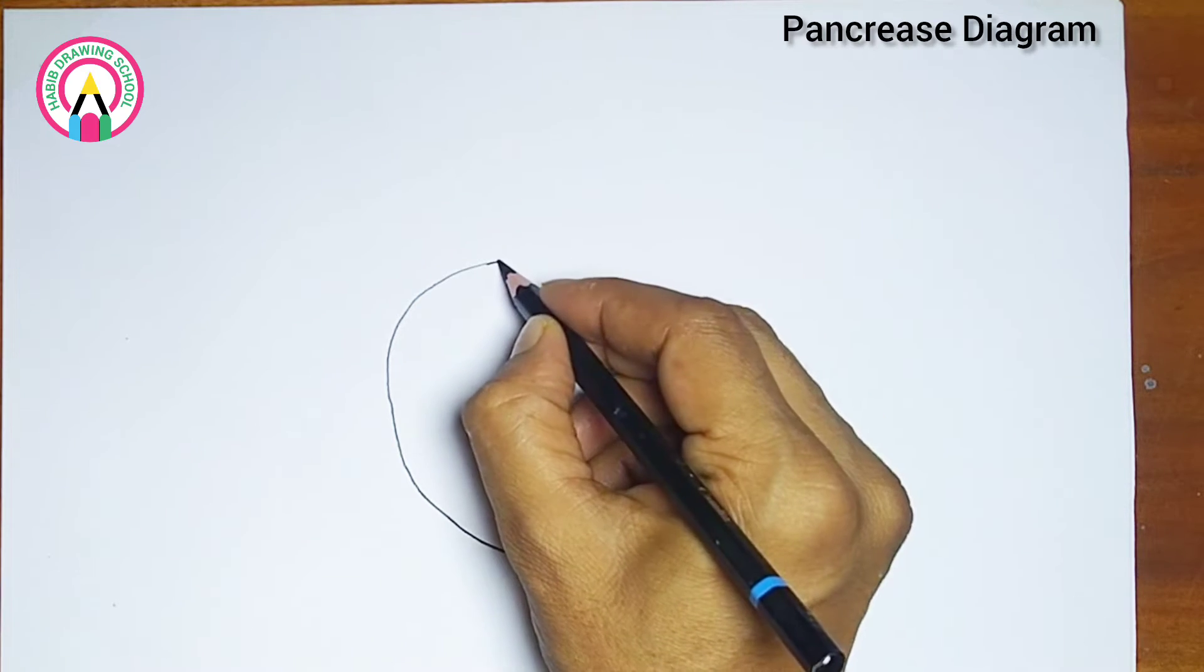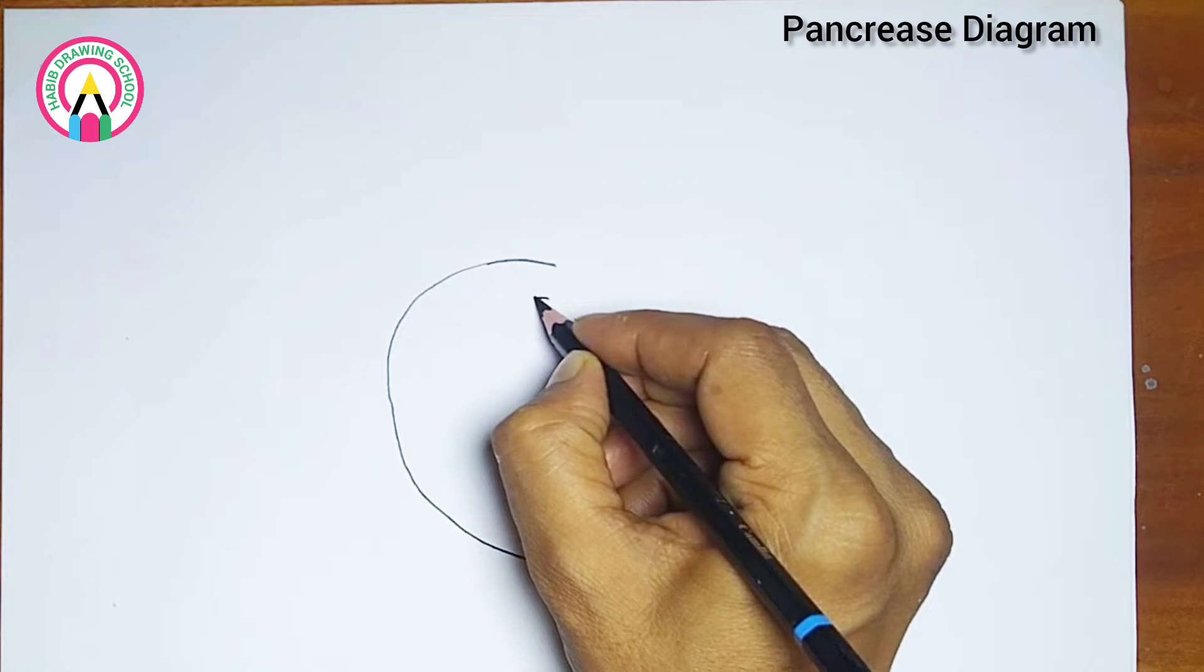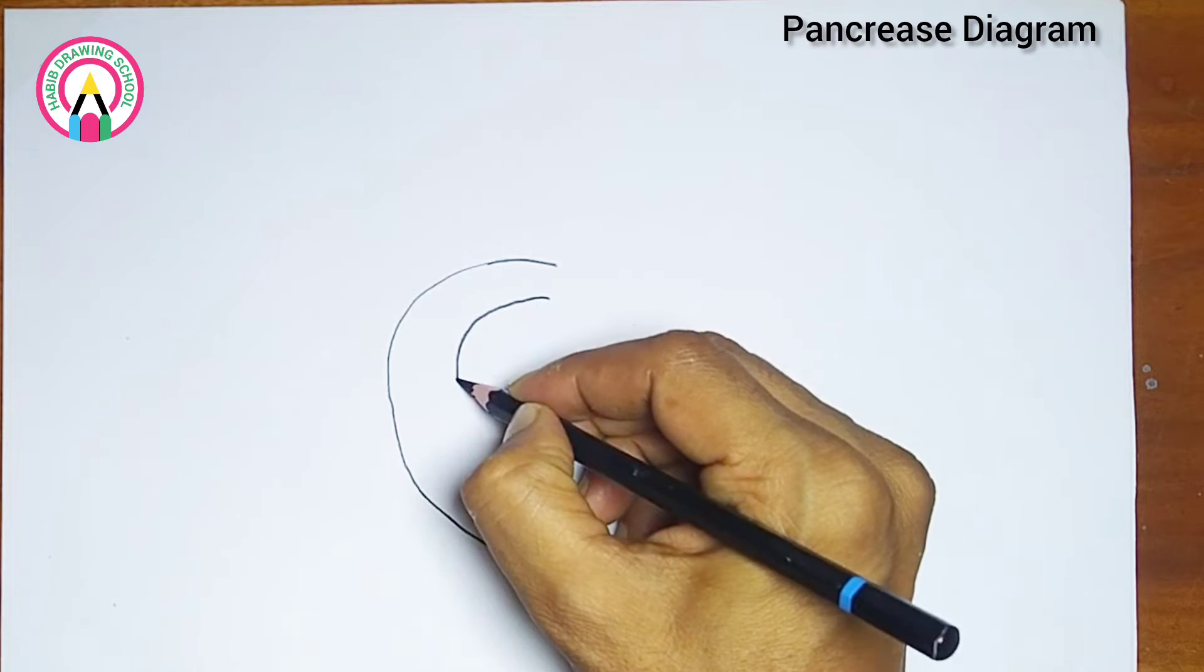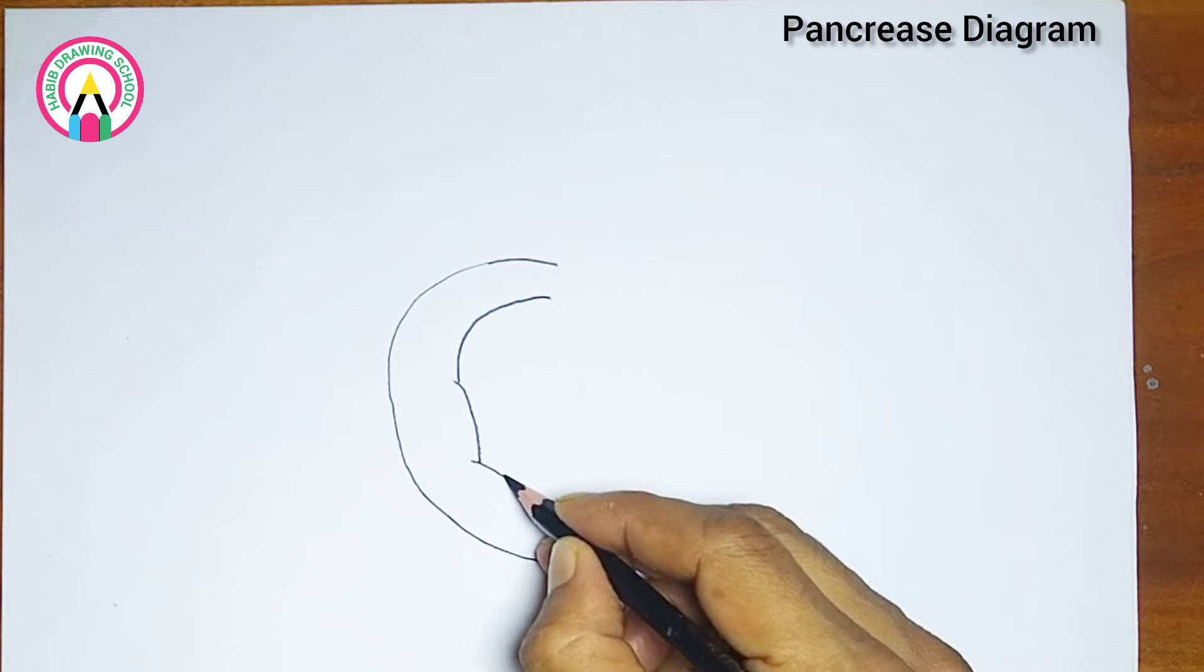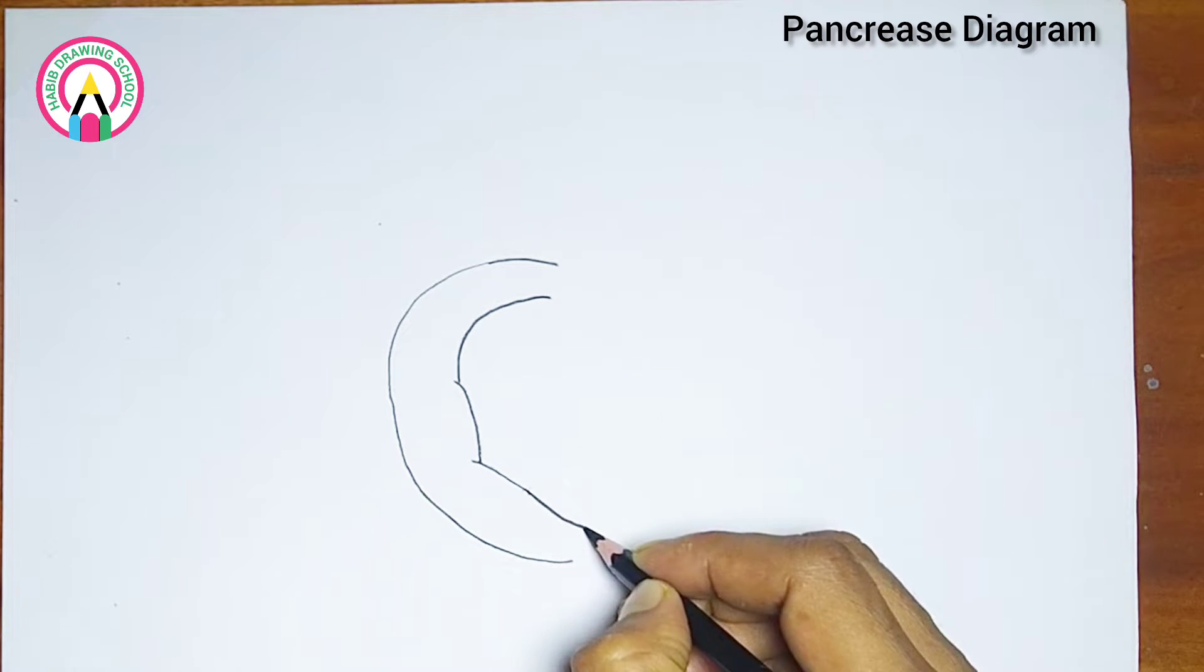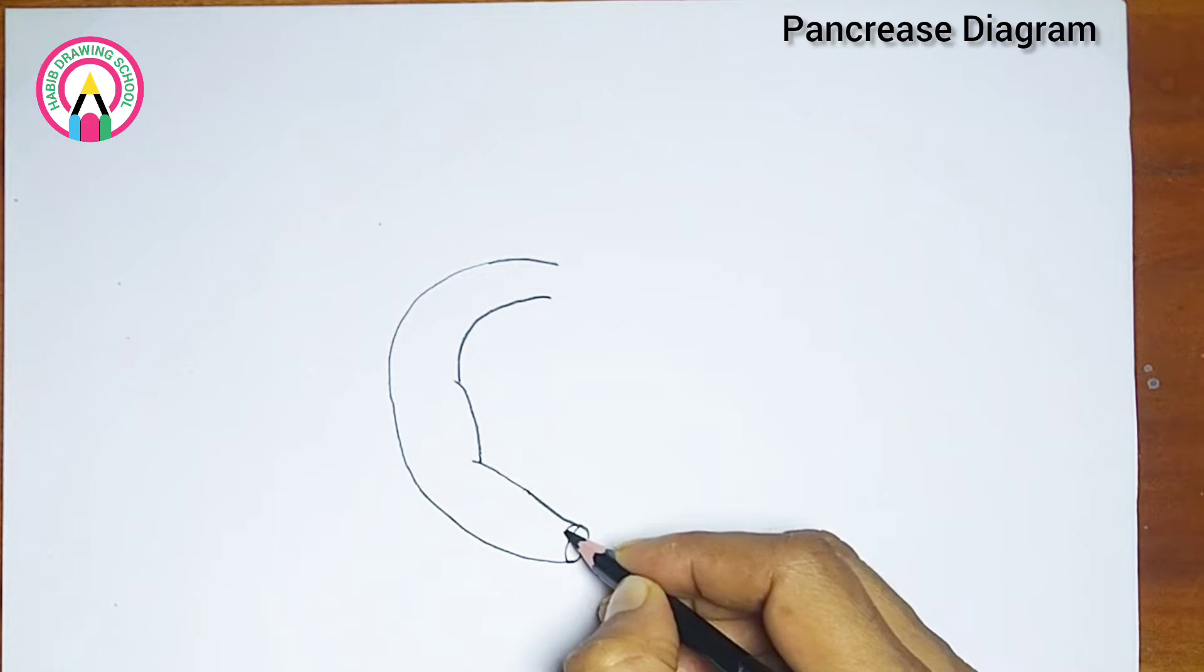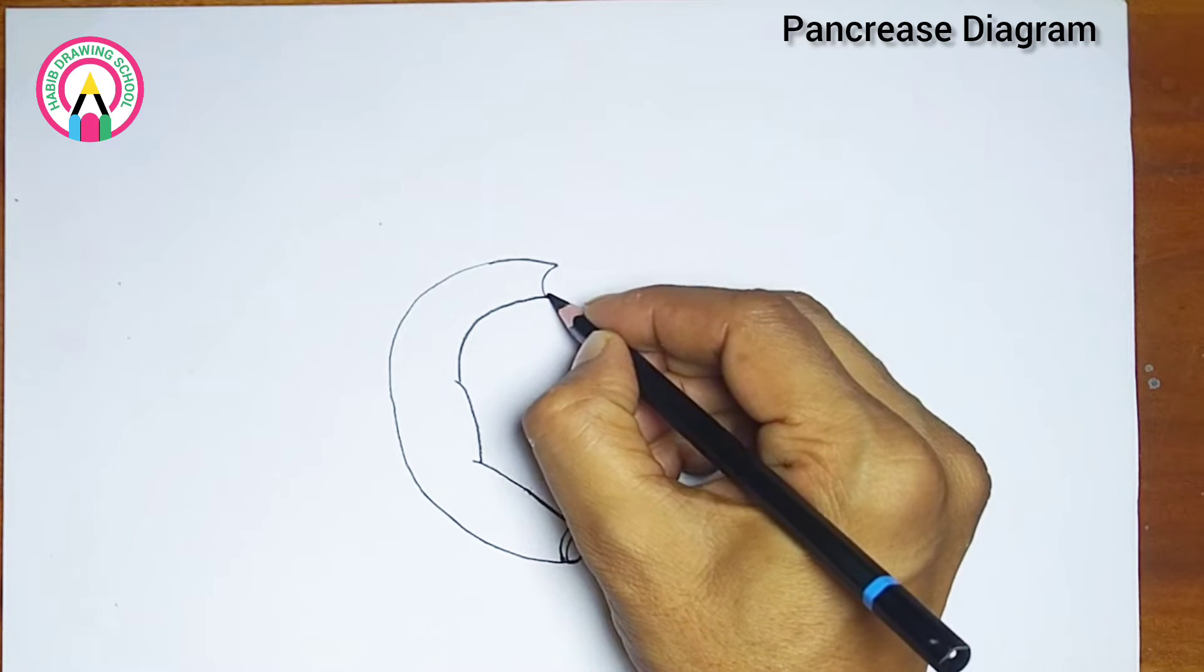The pancreas is a vital organ located behind the stomach. It plays two key roles in the body: producing digestive enzymes to break down food in the small intestine, and producing hormones such as insulin and glucagon which regulate blood sugar levels.